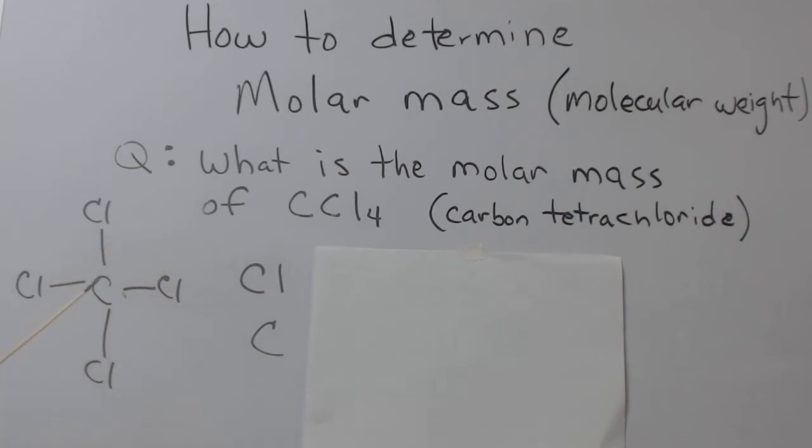Carbon tetrachloride is a molecule with a carbon in the center surrounded by four chlorines. Now this doesn't do it justice. It's not a flat molecule. The geometry is a tetrahedron, but we're not going to get into that right now. We're going to get into that later on in a different series.